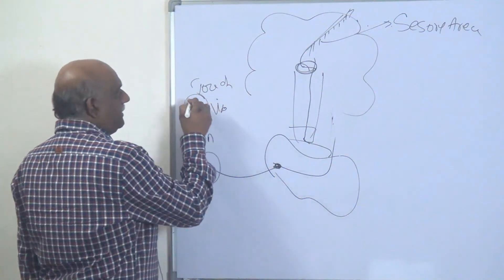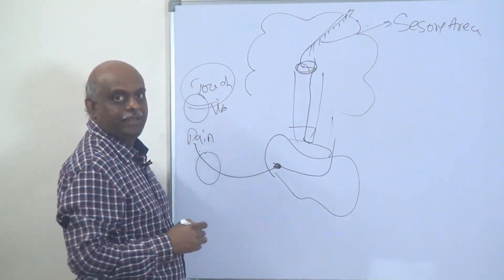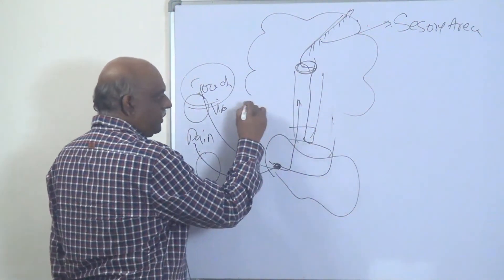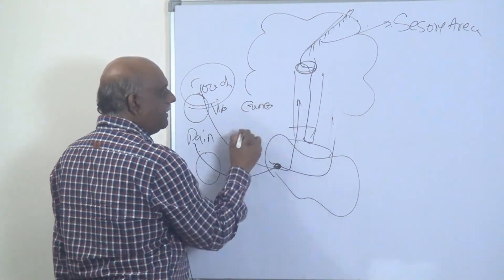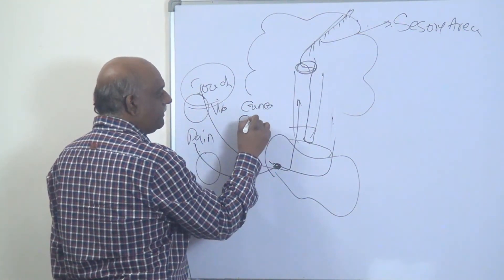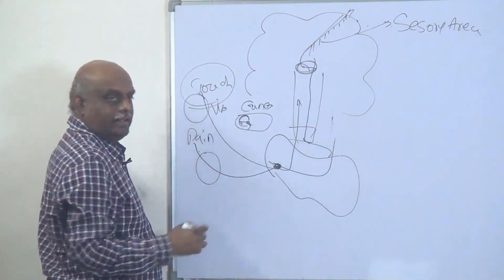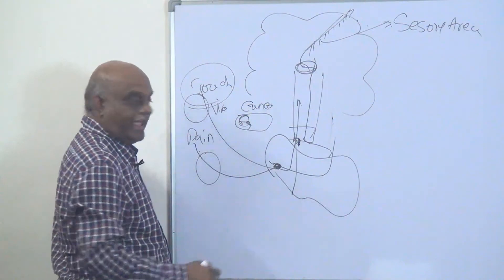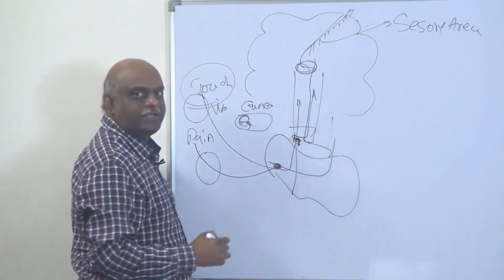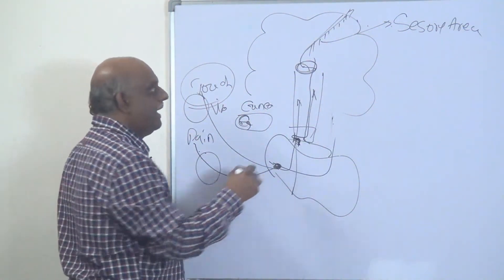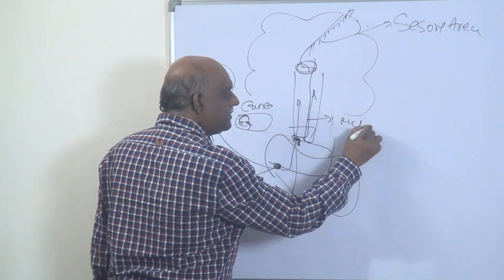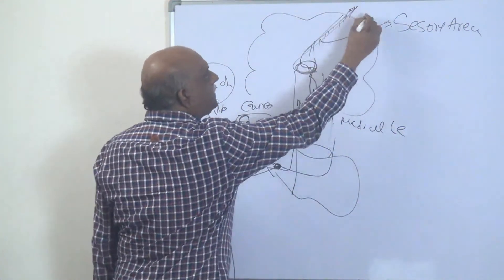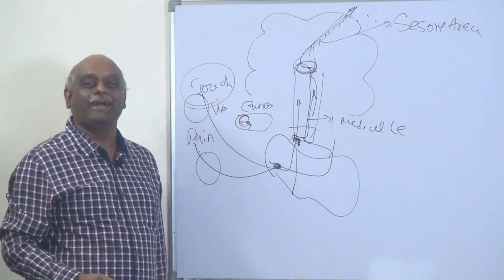Then, the touch and vibration, they reach the dorsal cord and they ascend up as cuneate and gracile, gracile and cuneate tracts. They reach the lower medulla ipsilaterally and from here, they go contralaterally to the opposite side. They decussate there and they are carried as medial lemniscus and they also reach the thalamus. And from the thalamus, they go to the somatosensory area.